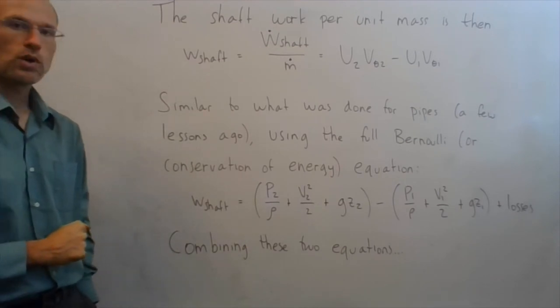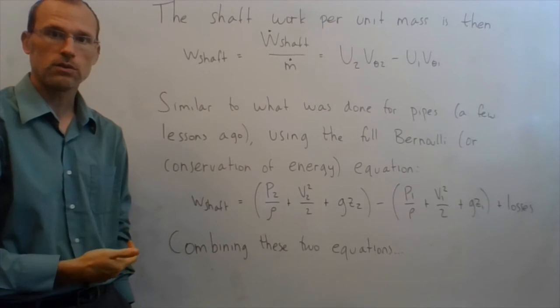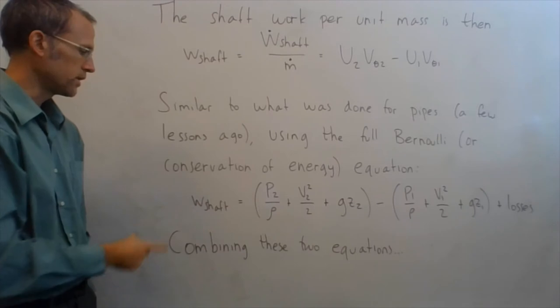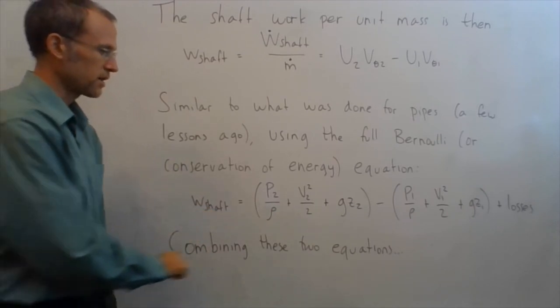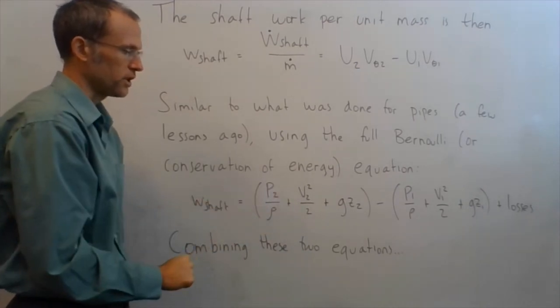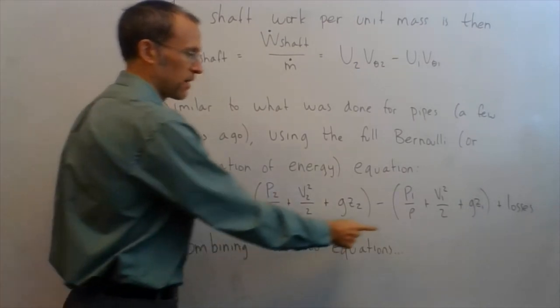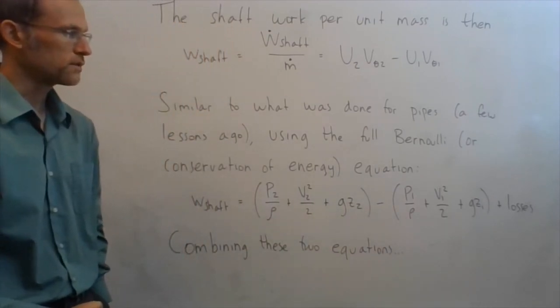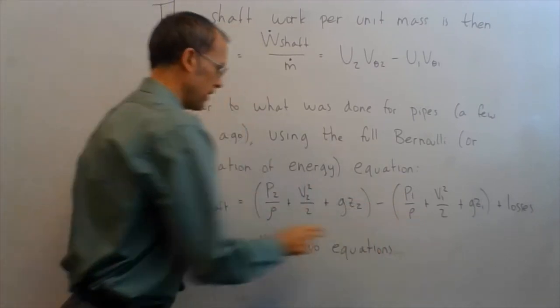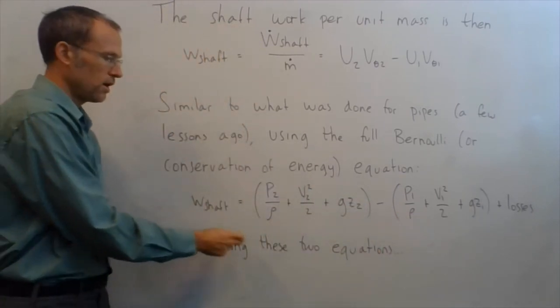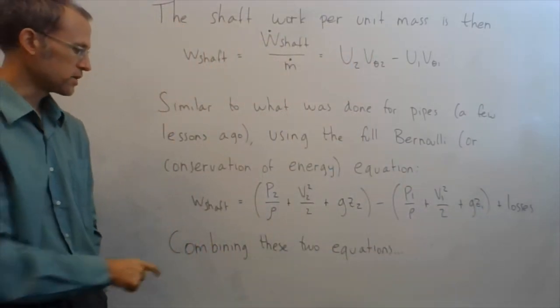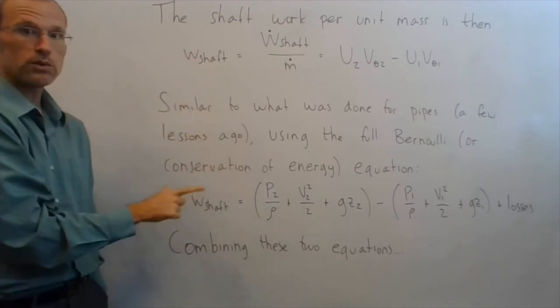And similar to what was done previously for pipe flow, we can use the full Bernoulli or conservation of energy equation here, so in this case my shaft work is my second state p2 over rho plus v2 squared over 2 plus gz2 minus my first state p1 over rho plus v1 squared over 2 plus gz1 plus my losses, so essentially this guy on the left plus work coming in equals this guy plus my losses, so just rearrange slightly, and then what I want to do is combine these two, so basically set them both equal to each other.